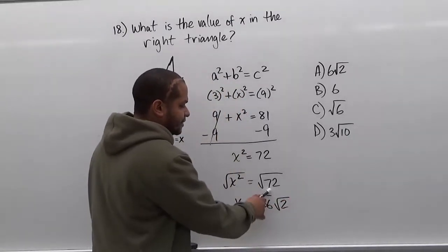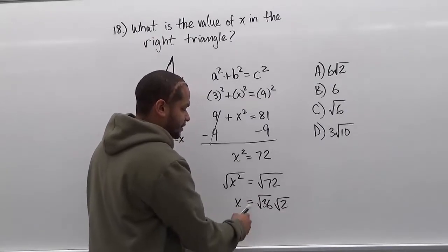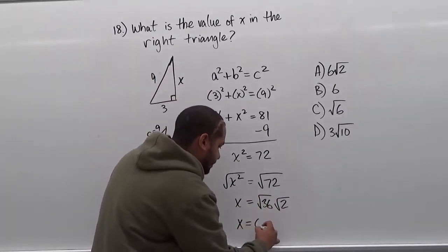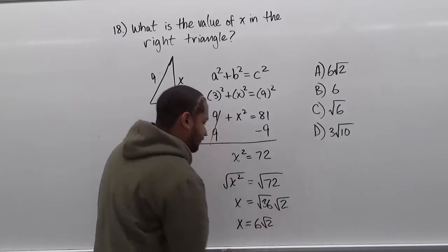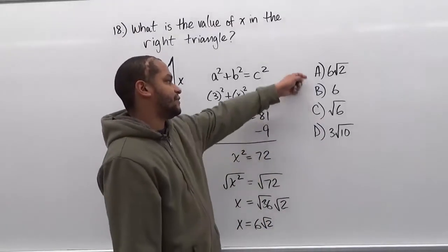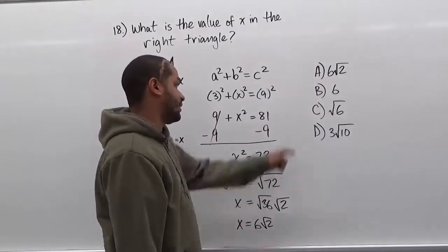These two multiply to make 72 and also break down into these two radicals. So finally, the square root of 36 is just 6. Here we have our answer: 6√2. That answer choice is A.